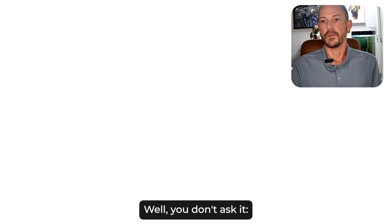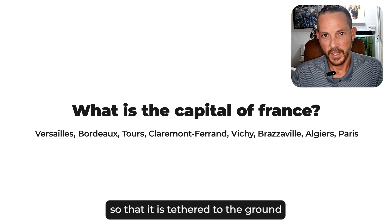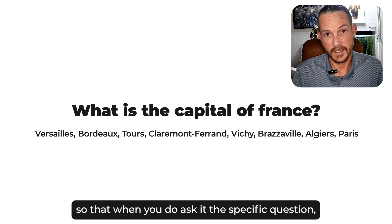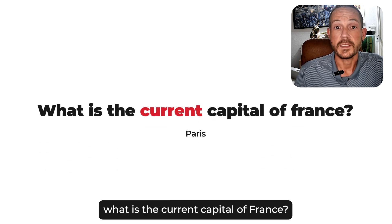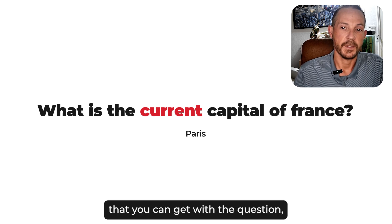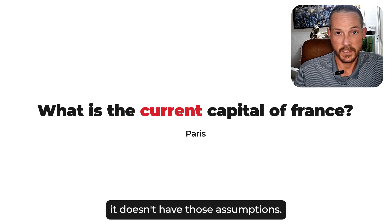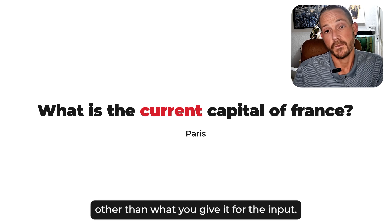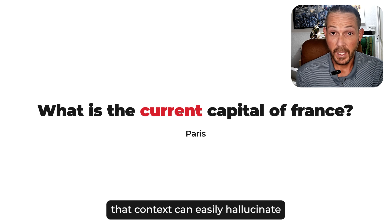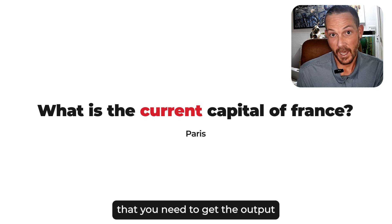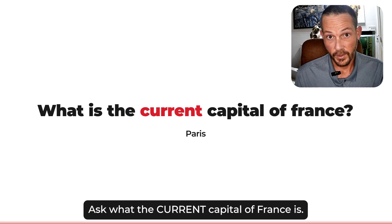So how do you fix this? You don't ask 'What's the capital of France?' First, you ground your information so it is tethered with your own data, so when you ask the specific question, it can give you the specific answer. You ask 'What is the current capital of France?' The more specific you can get with the question, the better the answer — because the LLM doesn't have the context of whatever you're assuming. It doesn't have those assumptions. It only has what you give it as input. Grounded context can still hallucinate unless you ask the specific questions needed.